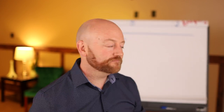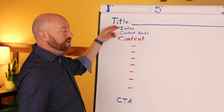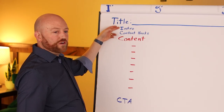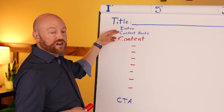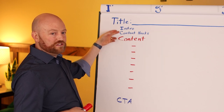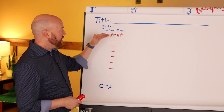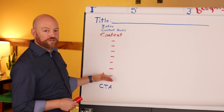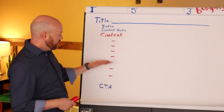Once I have the titles selected — the list of videos that I want to film — and I'm ready to prepare the content, I use the same outline every time. This is what the outline looks like. I've got my title. I can make notes about my intro if there's anything I want to say specifically. I remind myself to give content hooks. Then I have several bullet points where I can just put the talking points of things that I want to talk about throughout the video — what I want to talk about first, second, third.